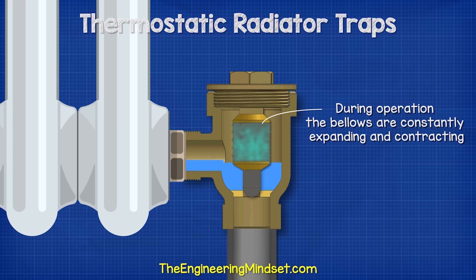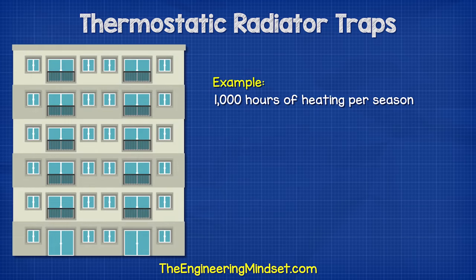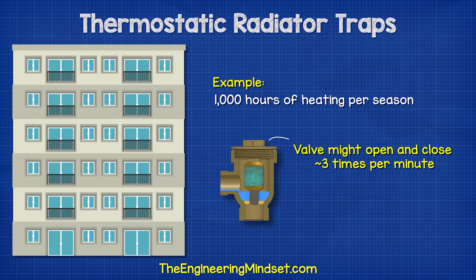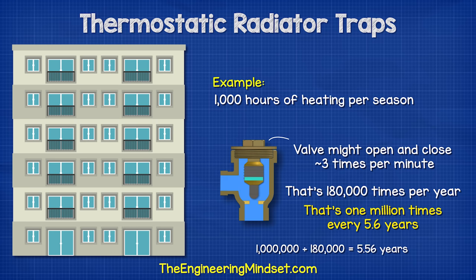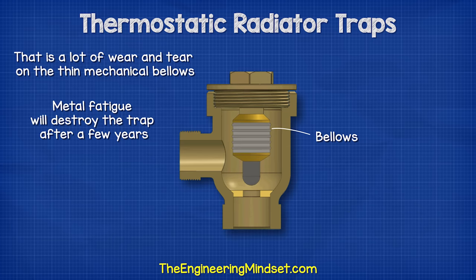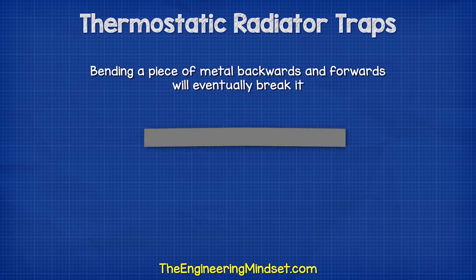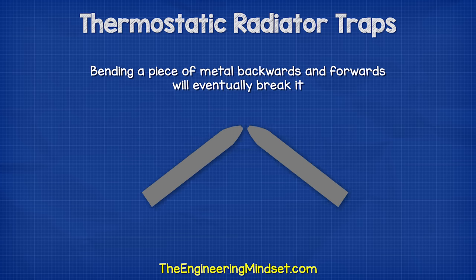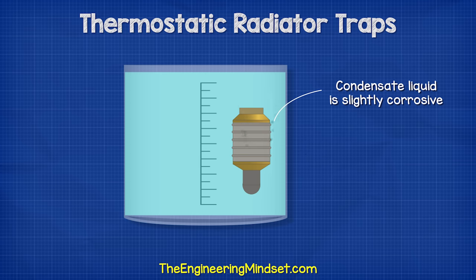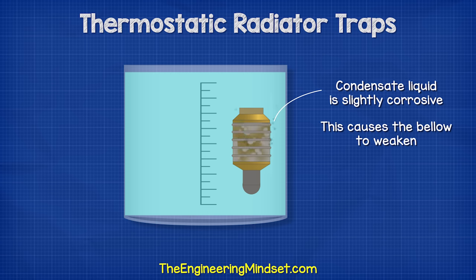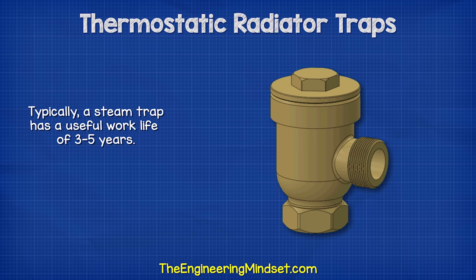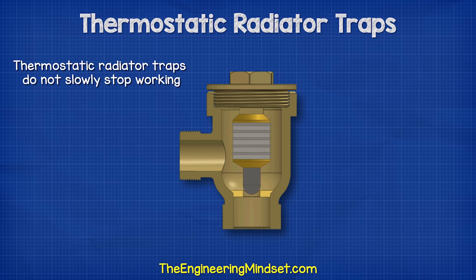During operation the bellows are constantly expanding and contracting. In a typical building with around 1,000 hours of heating per season, the trap might open and close about three times per minute — approximately 180,000 times in a single heating season. After five or six years, the trap may have opened and closed more than one million times. Simple metal fatigue will eventually destroy the trap, much like bending a piece of metal back and forth on the same axis. Additionally, the corrosive nature of the condensate weakens the bellows. A steam trap typically has a useful life of around three to five years.